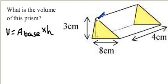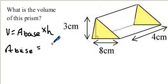So in this case our base is a triangle. So first of all we'll find the area of the base. The area of the base, just like the area of any triangle, is 1 half times base times height.